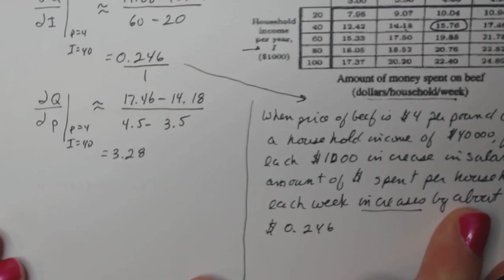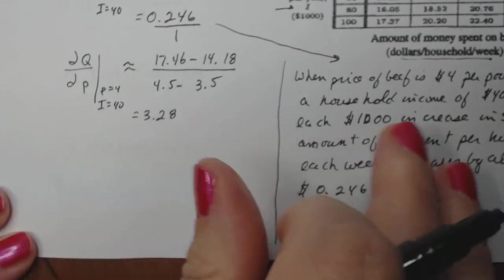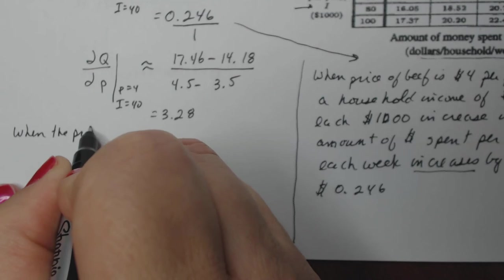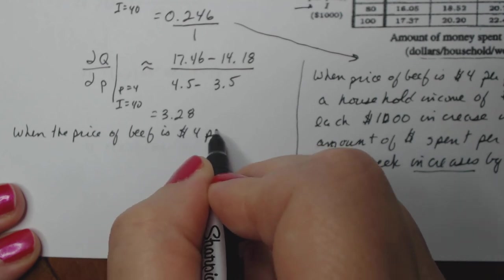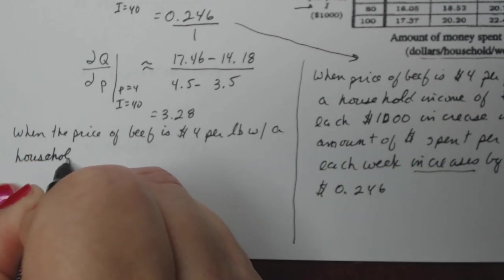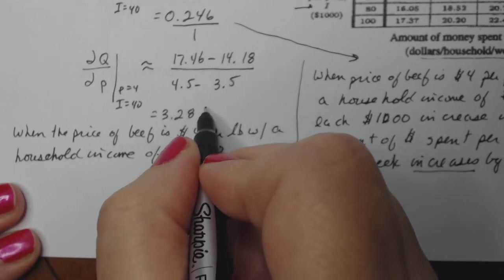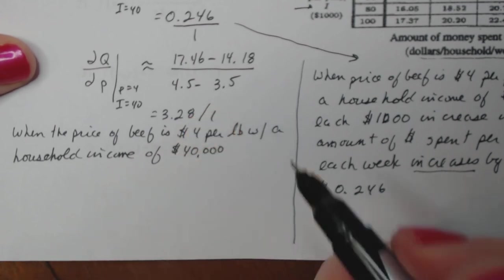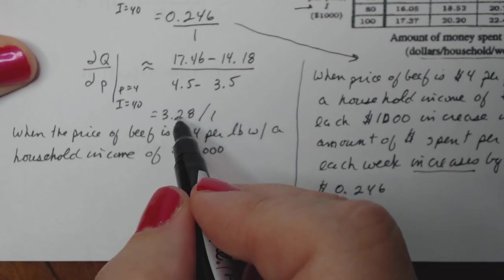Now let's do this guy here to be very similar. I'm going to start the exact same way. When the price of beef is $4 per pound with a household income of $40,000. Now, again, I think about this as 3.28 over one. And I think about, okay, the dependent variable, I need to talk about how if the independent variable changes by one, how does this change? The dependent variable. So I'm going to change my independent variable by one unit.